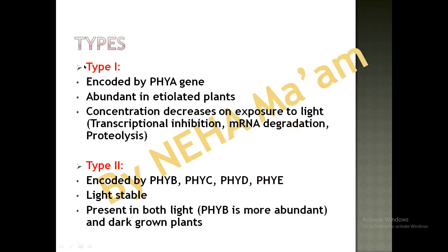There are two types of phytochromes: Type 1 and Type 2. Type 1 phytochrome is encoded by the phyA gene; it is abundant in etiolated (dark-grown) plants, and its concentration decreases on exposure to light — so it is light sensitive. On exposure to light, there is transcriptional inhibition of type 1 proteins, mRNA degradation, and even proteolysis of phytochrome proteins. Type 2 phytochrome is encoded by four gene family members — phyB, phyC, phyD, and phyE. It is light-stable and present in both light- and dark-grown plants.